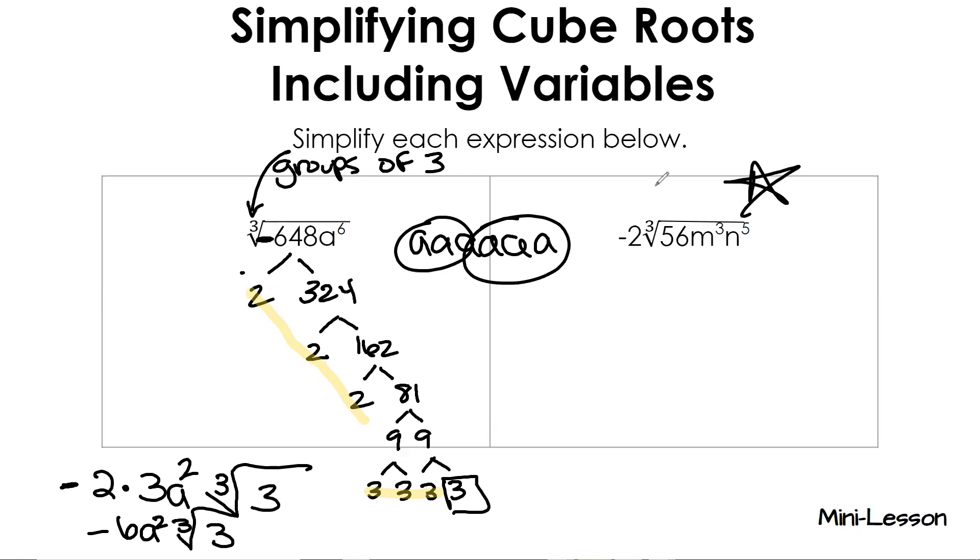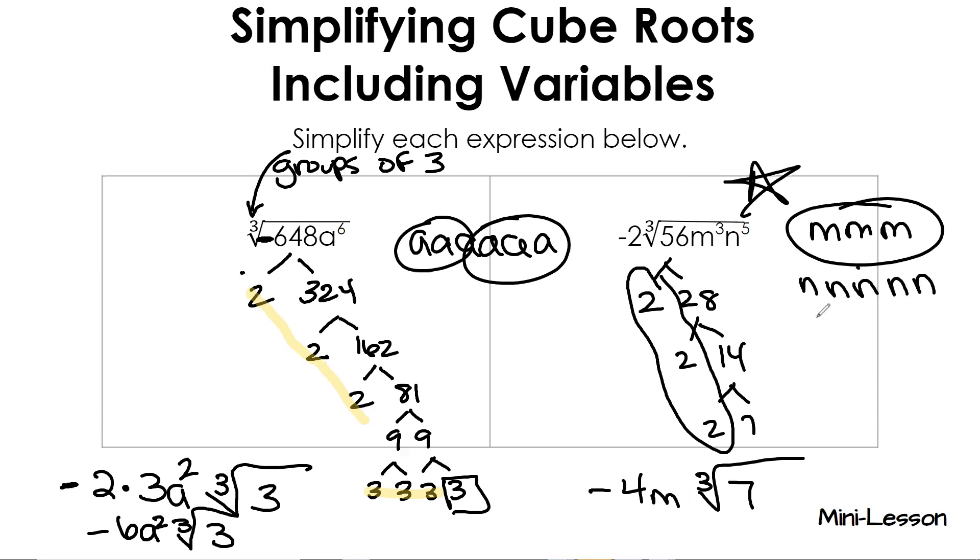Can you try this one? So we're going to take 56 and we're going to divide it by 2. And so that's going to give us 28. We're going to divide 28 by 2. That's going to give us 14. Do that again? We need a group of 3. So we've got 3 2s. So that's going to give us negative 4, cube root of 7 on the inside. There's 3 m's. We're going to pull one of those out. And then there's 5 n's. So we're going to pull one of those out and we're left over with an n squared. So we get negative 4mn cube root of 7n squared.